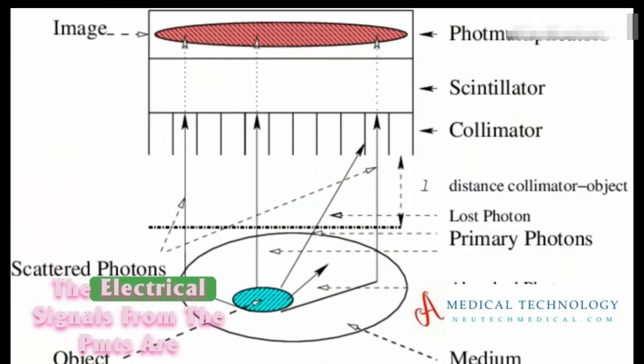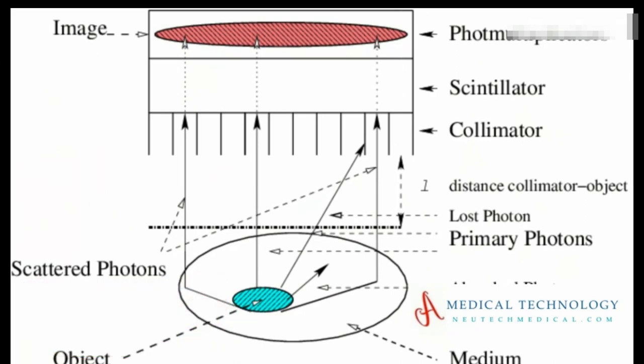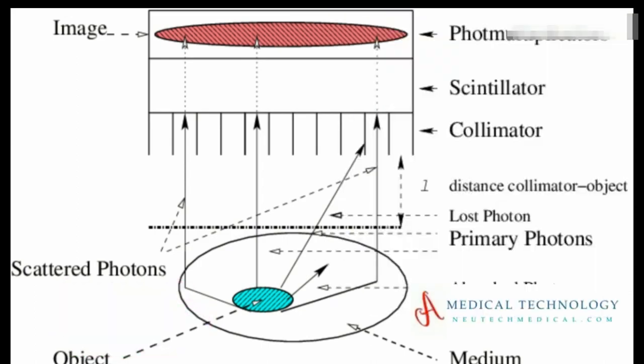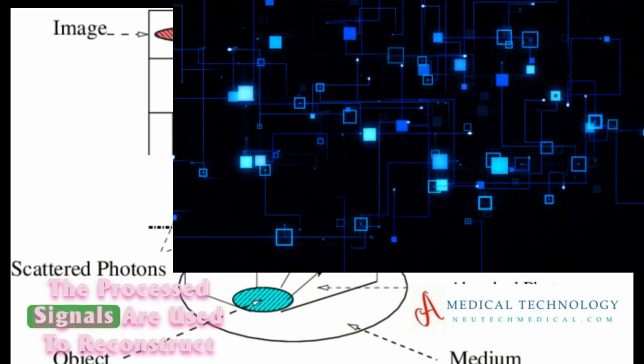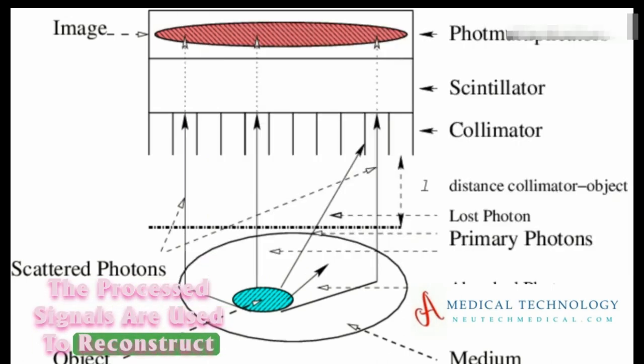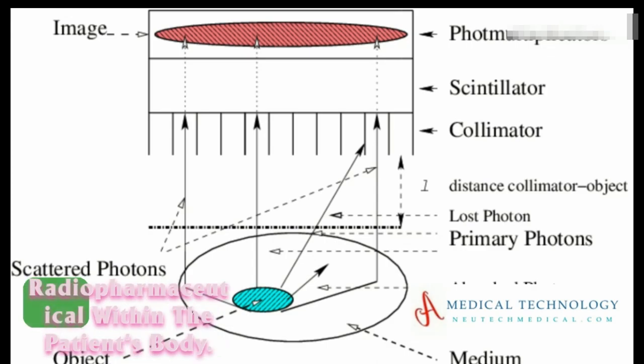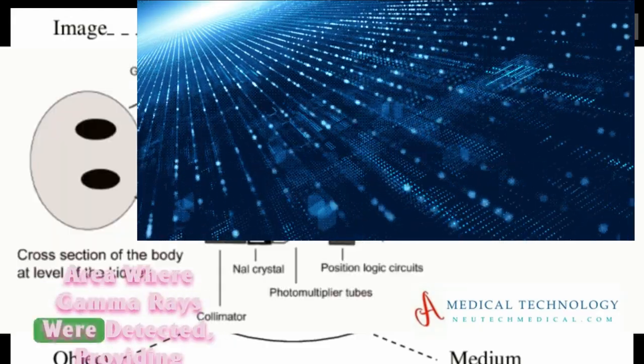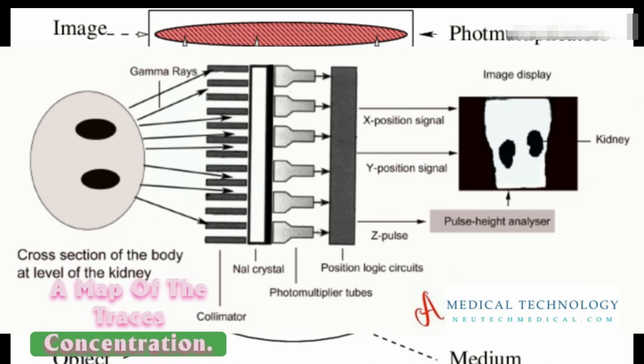Signal processing: The electrical signals from the PMTs are processed by the gamma camera's electronics. The position and intensity of each scintillation event are determined based on the signals received from the PMTs. Image reconstruction: The processed signals are used to reconstruct an image of the distribution of the radiopharmaceutical within the patient's body. Each point in the image represents an area where gamma rays were detected, providing a map of the tracer's concentration.